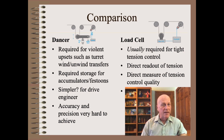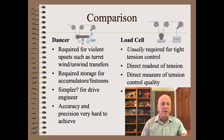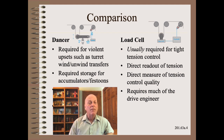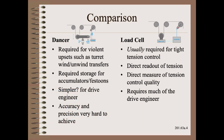A more complete answer would be to compare the strengths and weaknesses of both dancers and load cells. Dancers are required for certain applications where violent upsets are to be expected, such as turret winder transfers. However, load cells are usually required for tight tension control. There are many other issues to consider, such as maintenance. Both of these sensors can be challenging in the brutal web machine environment, but for their own reasons. You should go to school if you design or buy web machines in order to not overlook some vital detail.